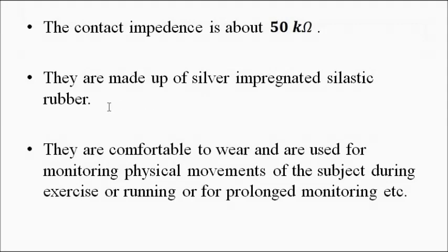The contact impedance of floating electrodes is generally about 50 kilo-ohms. They are made of silver-impregnated silastic rubber, which allows them to cling to the specific body part. They are very comfortable to wear and do not require electrode jelly for adhesion. Because motion artifacts are greatly reduced, floating electrodes are used for monitoring the ECG during physical activity such as exercising.